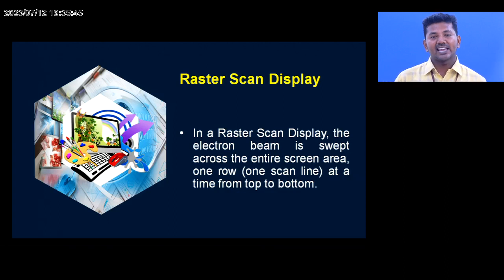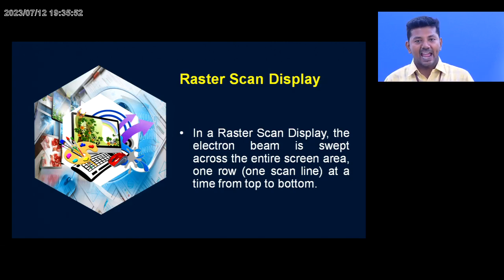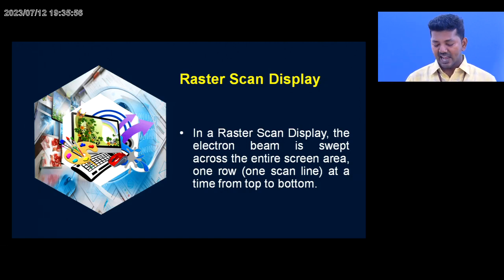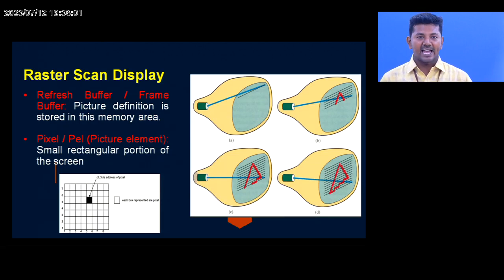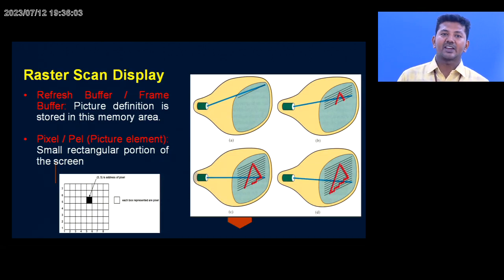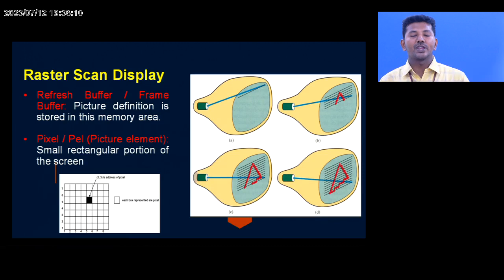Whenever the electron beams are passed through the electron guns, the scan line is getting elevated. Based on the scan lines scanned by the electron beams, this is called a raster scan display. In raster scan display there are many components. The first component is a refresh buffer or a frame buffer, in which the definition of a picture is stored in the area.